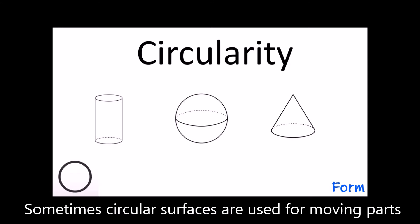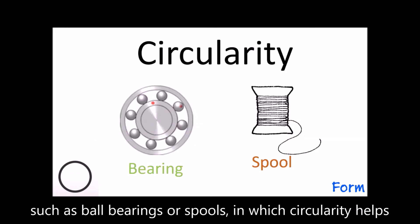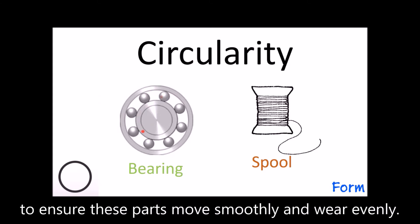Sometimes circular surfaces are used for moving parts, such as ball bearings or spools, in which circularity helps to ensure these parts move smoothly and wear evenly.